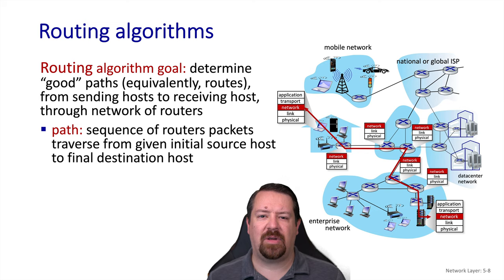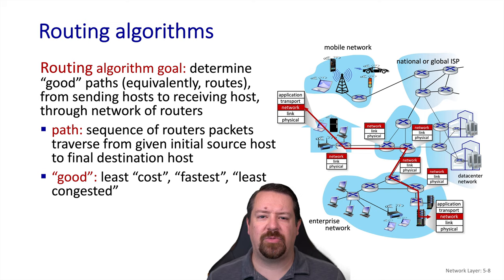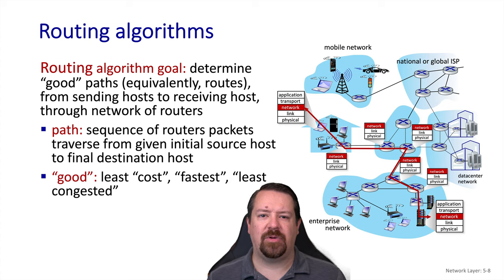When we talk about paths, we're talking about the sequence of IP routers used to traverse the network — at the network layer, so we don't include layer two devices in these paths. We don't just want the routing algorithm to find a path, but we want it to find the best path for some definition of best. We can typically generalize best as the least cost path. In many cases, the cost is just the number of hops on the path, so we want the shortest path. But it's certainly possible to incorporate other metrics to be considered by the routing algorithm.